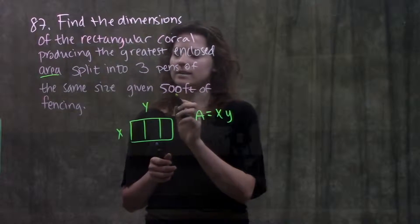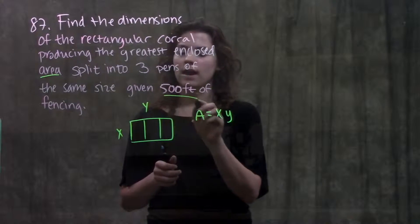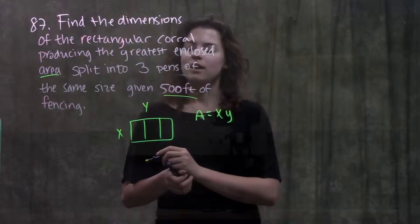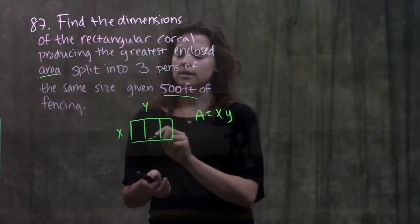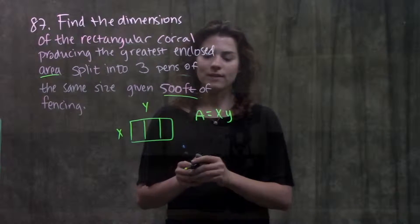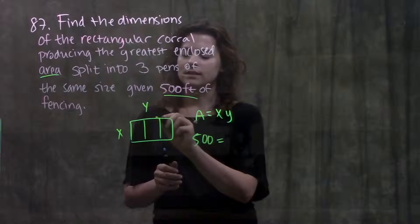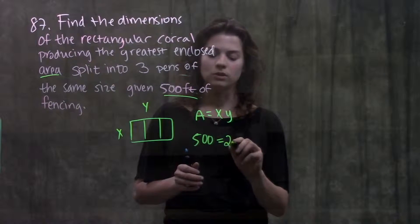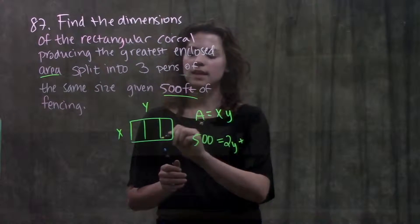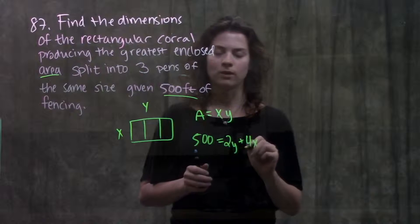Alright so look at what else they tell us. They tell us that we are given 500 feet of fencing. So that means that this length plus this length plus all the ones in the middle all that fencing is equal to 500. So 500 is equal to this length y plus this one so 2y plus how many x lengths do I have? I have four x's.